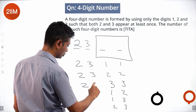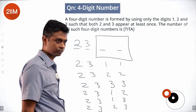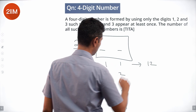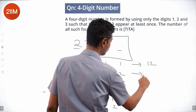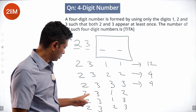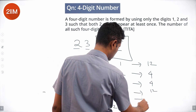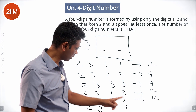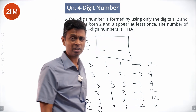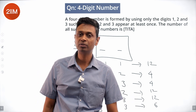The possible digit sets are: {2,3,1,1}, {2,3,2,2}, {2,3,3,3}, {2,3,1,2}, {2,3,1,3}, {2,3,2,3}. Arrangements: 4!/2! = 12 for sets with one repeated pair; 4!/3! = 4 for sets with three of a kind; 4!/(2!·2!) = 6 for sets with two pairs. Totalling: 12+4+4+12+12+6 = 50.